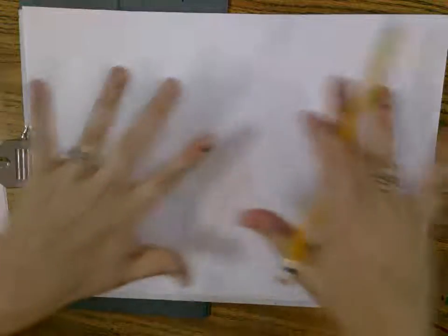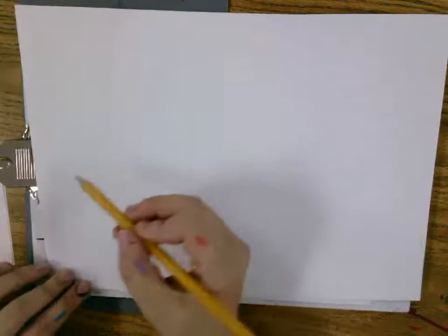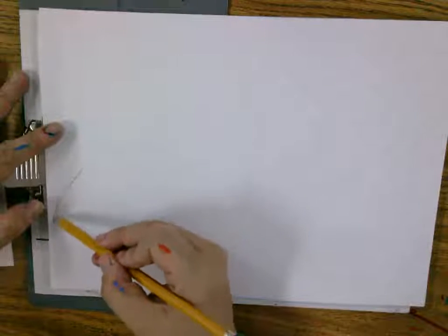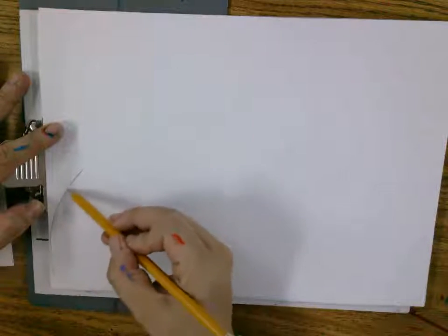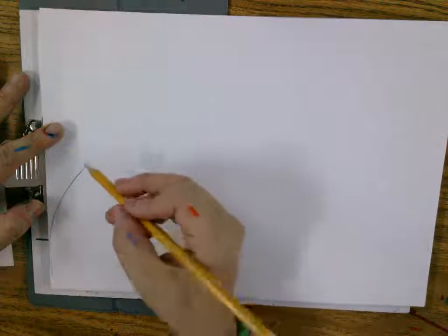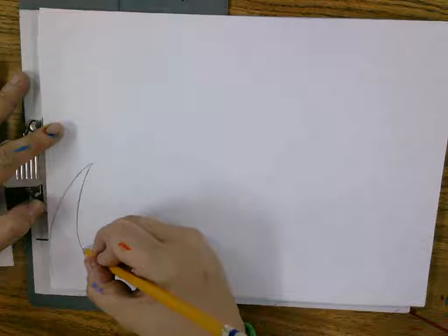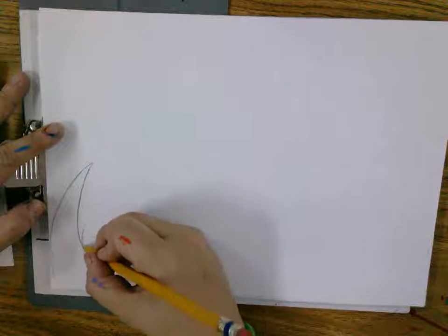So to make some wavy grass with my pencil, I'm just going to make like some lines, maybe like the letter C or Bs. And you want these to be different heights. You don't want your grass to just go straight up and down. You're going to try to curve it a little bit. So maybe some tall, medium, short.